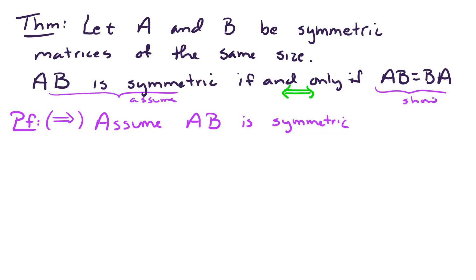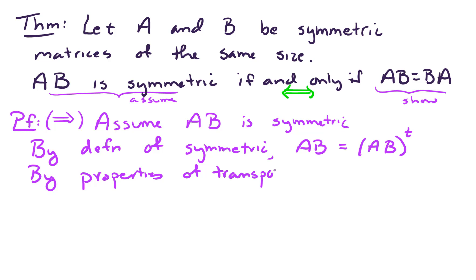So we've assumed that AB is symmetric by definition of symmetric. This implies that AB is equal to the transpose. And by properties of transpose, this implies that AB is equal to B transpose times A transpose. And again, by definition of symmetric matrices, A and B are both symmetric. So now on that right-hand side, B transpose, that's the same as B. And A transpose, that's the same as A.